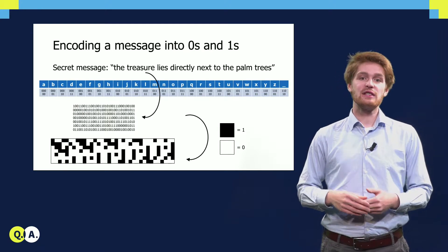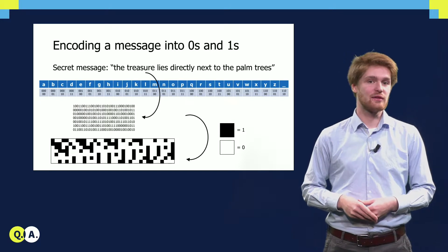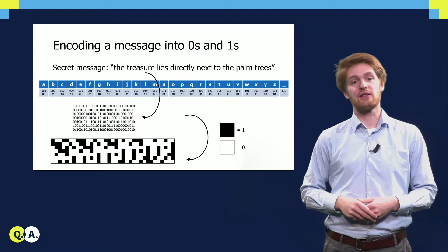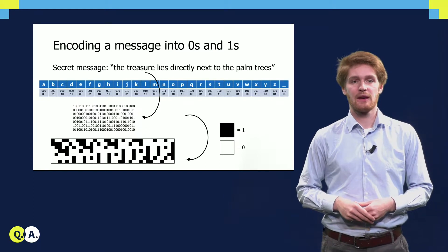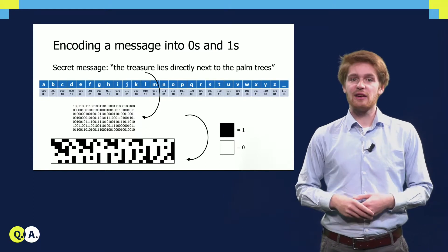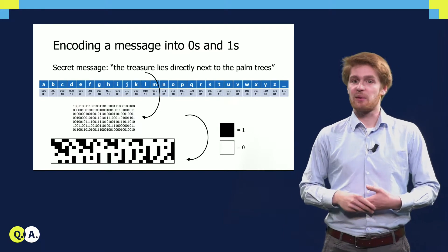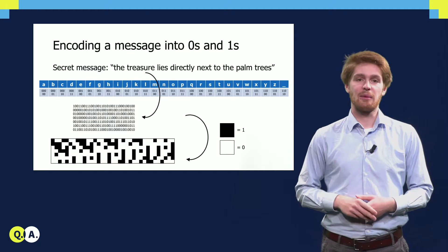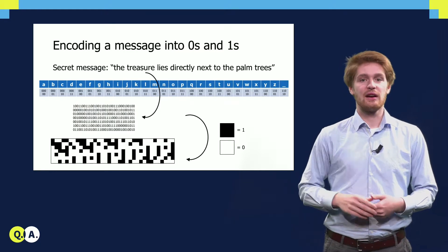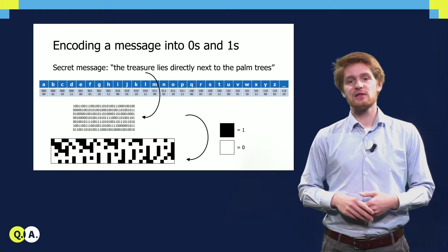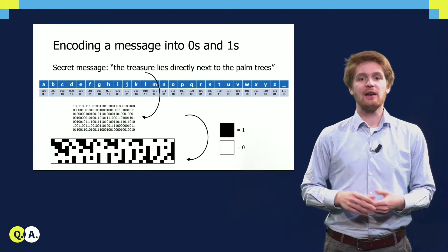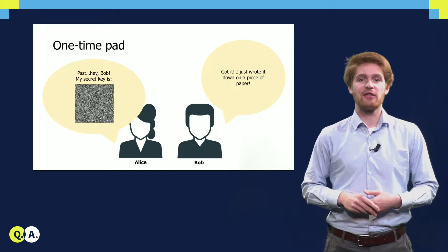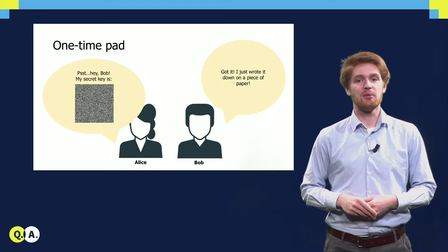We can reverse this procedure by first cutting up the sequence into blocks of five digits, and then decoding each of the blocks using the dictionary in the reverse direction. We can take this a step further and translate the message into a black and white image. We do so by writing every one as a black pixel and every zero as a white pixel, and this results in the image shown below. Now that we know how to encode a piece of text in bits or in an image, we are ready to learn how the one-time pad scheme works.